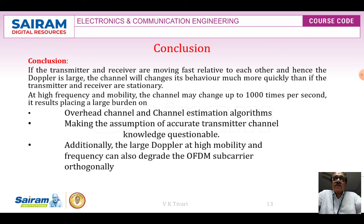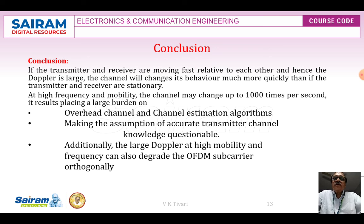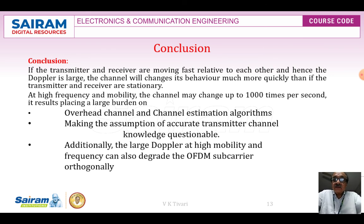It is more difficult to maintain smooth signal transmission when both the transmitter — the subscriber connected to the calling party — and the destination receiver are moving. Doppler plays a major role in high-frequency, high-mobility scenarios where the channel may change up to 100 times per second. This places a large burden on overhead channels and channel estimation algorithms, making accurate transmitter channel knowledge questionable. Additionally, large Doppler in high mobility and frequency can also degrade OFDM — orthogonal frequency division multiplexing — subcarrier orthogonality. That's all — thank you very much.